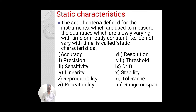Starting with static characteristics: static characteristics are the set of criteria defined for instruments used to measure a quantity that varies very slowly with time, or is mostly constant — that is, does not vary with time. Because the quantity does not vary much with respect to time, these characteristics are known as static characteristics. Static characteristics has near about 12 parameters or performance characteristics.